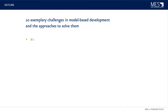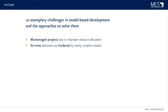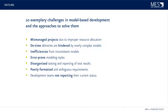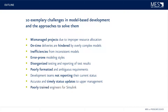We will have a look at mismanaged projects due to improper resource allocation, on-time deliveries that are hindered by overly complex models, inefficiencies that come from inconsistent models, error-prone modeling styles, disorganized testing and reporting of test results, poorly formatted and ambiguous requirements, development teams that are not reporting their current status, the problem of accurate and timely status to upper management, poorly trained engineers for Simulink, and non-compliant processes to ISO 26262.